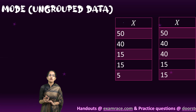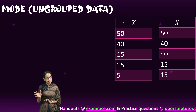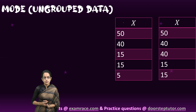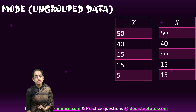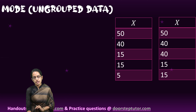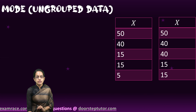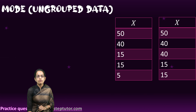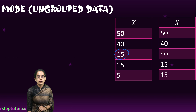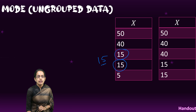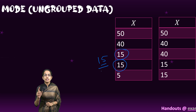Let's understand mode. Mode is a value that occurs most frequently in the distribution, and we call this as mode. Now we have two examples in the ungrouped data. We would be calculating mode for both the ungrouped and the grouped data today. In the ungrouped data it is very simple.